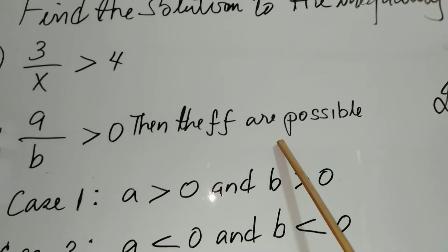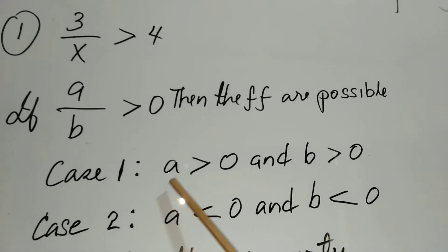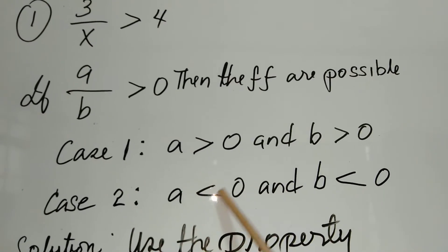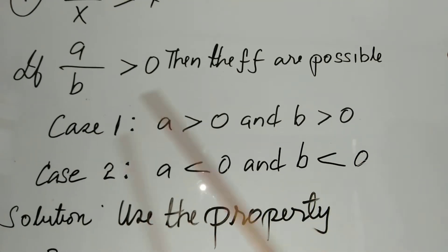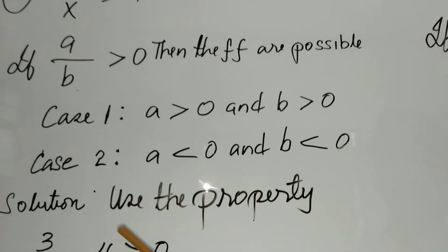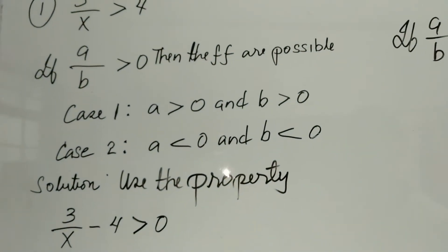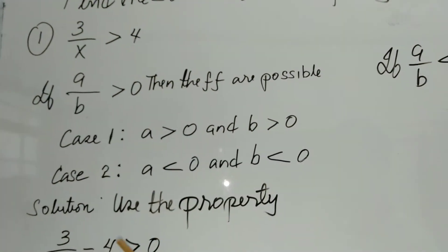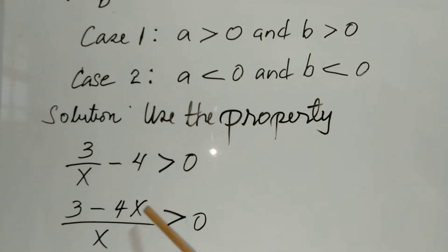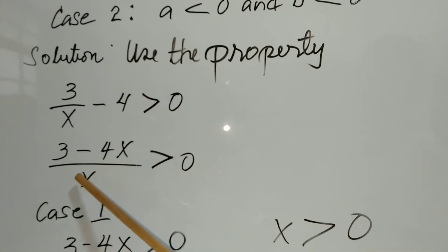Since we're using the case method, Case 1 is where a is greater than 0 and b is greater than 0. Case 2 is where a is less than 0 and b is less than 0. We transpose 4 to the left side of the inequality, giving us 3 over x minus 4 is greater than 0, which simplifies to (3 minus 4x) over x is greater than 0.